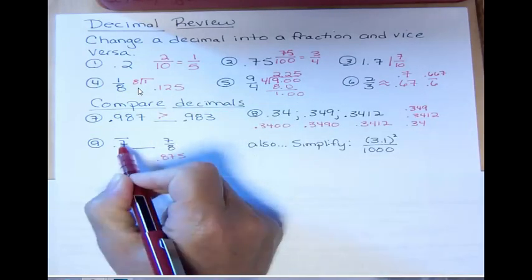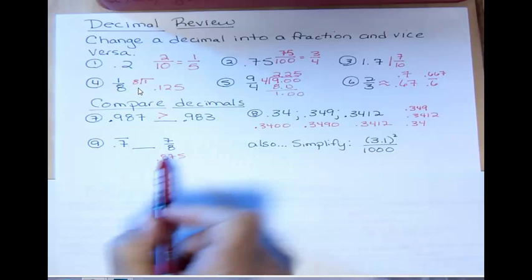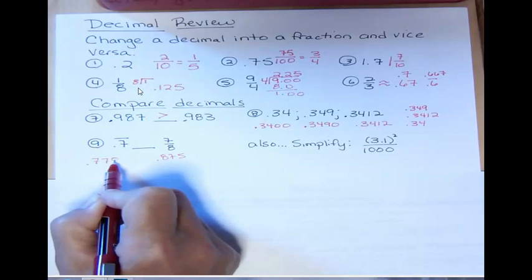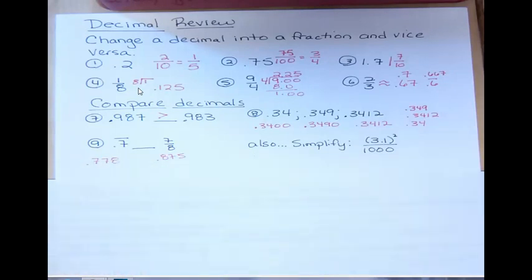And I'm going to rewrite this to have three decimal places too, since I know it's a repeating seven, seven, seven, but that last one would have to round up to eight. So it really is as a decimal, 0.778 to 0.875. Obviously then, this is the greater number.